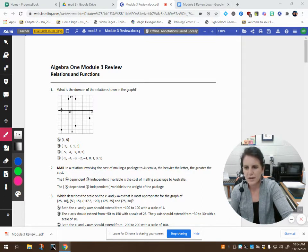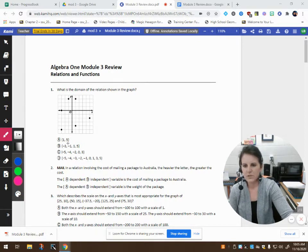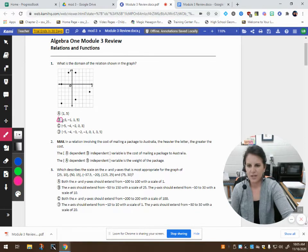Well, there's a point when x is negative 3, there's actually 2. There's a point when x is negative 1. There's a point where x is a positive 1 and a point where x is 5. So it looks like my domain would be letter B: negative 3, negative 1, 1, and 5.